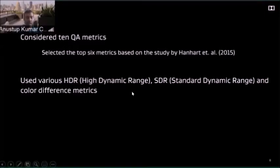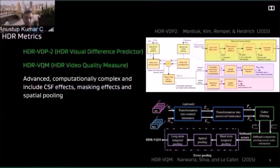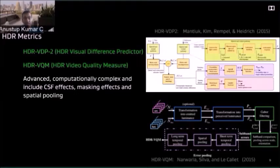As mentioned earlier, we use a combination of HDR metrics, SDR metrics, and color difference metrics. For the HDR metrics, we use two: HDR VDP2 (the Visual Difference Predictor) and HDR VQM (Video Quality Measure), though in our work we run it only on still images by ignoring the temporal pooling step. The HDR metrics in literature are typically quite advanced and computationally complex — they include the contrast sensitivity function (CSF) effects, masking effects, and a spatial pooling step.